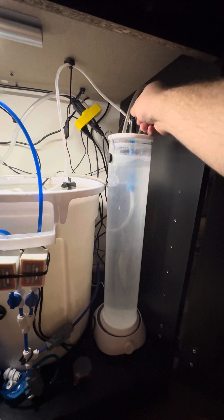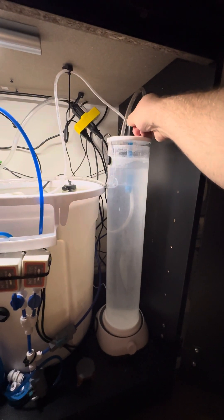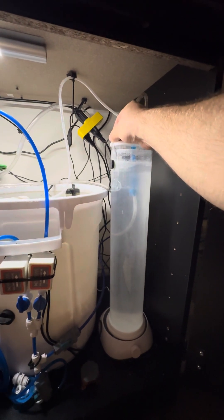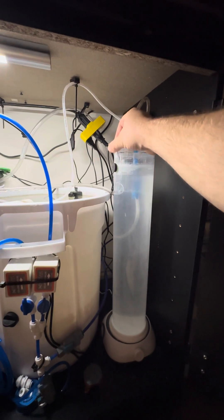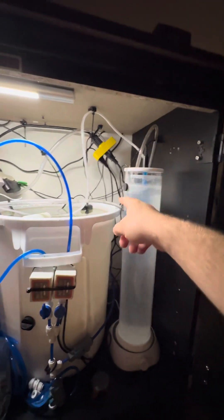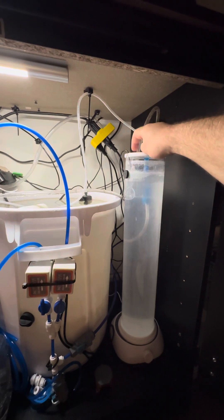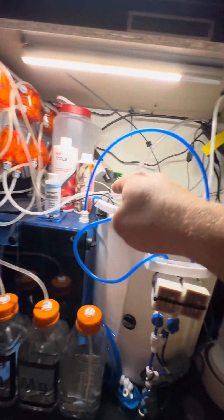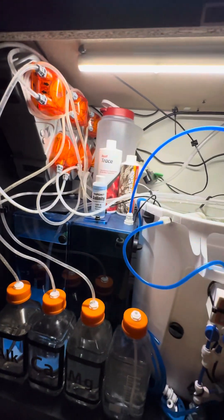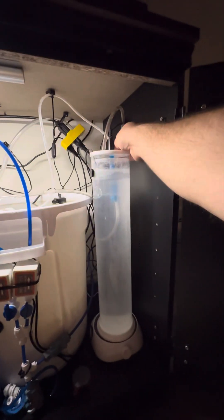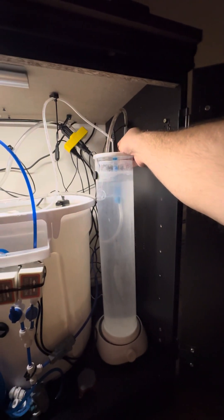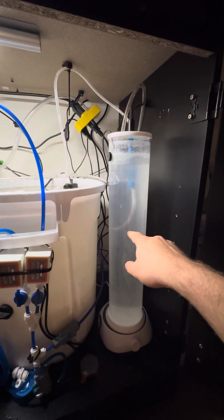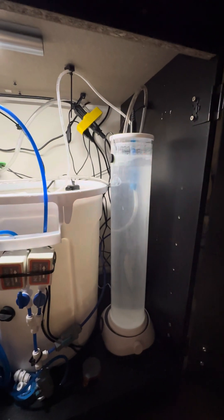A pinpoint pH probe for like $45 from bulk reef supply. An auto aqua ATO optical sensor with a tube that ejects the water into the canister and runs over to my auto top-off reservoir. And then a Neptune dosing line that goes about halfway down the body of the chamber of the Kalkwasser Reactor.